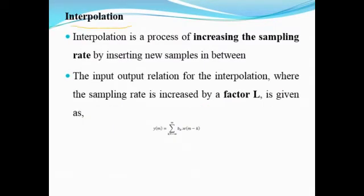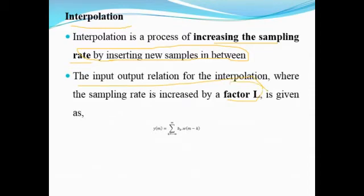Next is interpolation. Earlier we discussed decimation as the process of decreasing the sampling rate by dropping samples. Interpolation is the reverse process — increasing the sampling rate by inserting new samples between existing samples. The input-output relation is based on the interpolation factor L. The interpolated output sequence y of m depends on L, and is given by: y of m equals summation from k equals minus infinity to plus infinity of d_k times w of (m minus k).